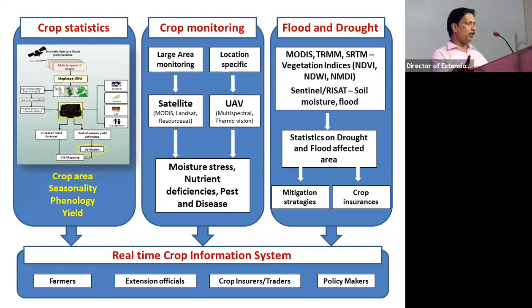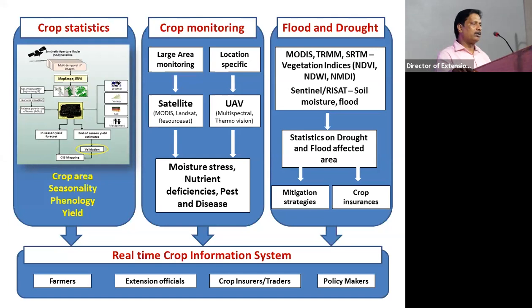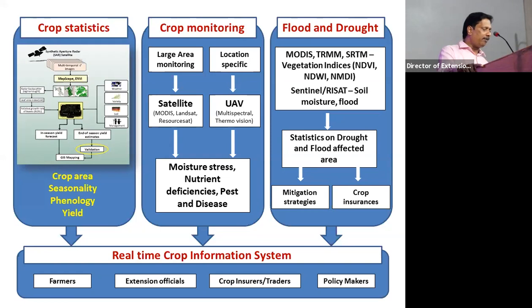For crop monitoring, we use satellite data for large area monitoring and drones for location-specific assessment. We assess moisture stress, nutrient deficiency, and are developing protocols for pest and disease assessment. For flood and drought, we develop information for mitigation strategies — for example, where PPFM spraying can be taken up during dry spells. If crop failure occurs, we pass information to insurance companies. Through this information system, we help farmers, extension officials, insurers, traders, and policy makers.